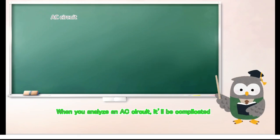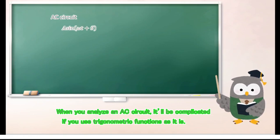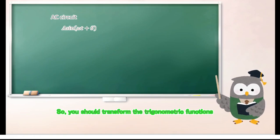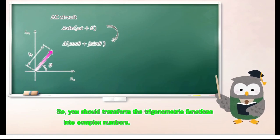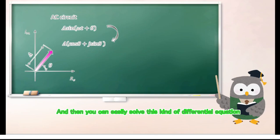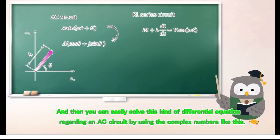When you analyze an AC circuit, it'll be complicated if you use trigonometric functions as they are. So you should transform the trigonometric functions into complex numbers. And then you can easily solve this kind of differential equation regarding an AC circuit, by using the complex numbers like this.